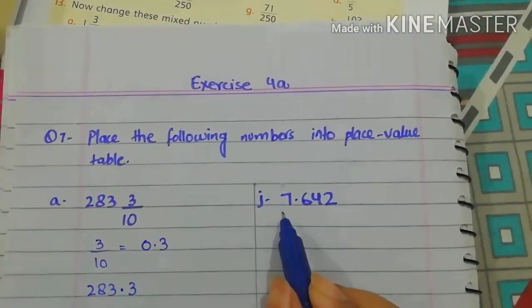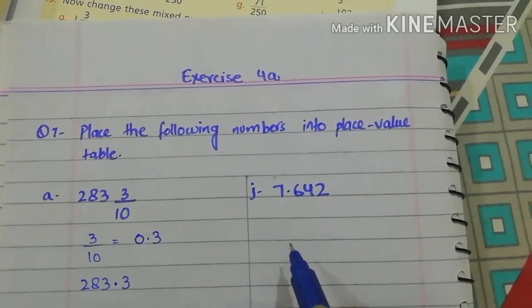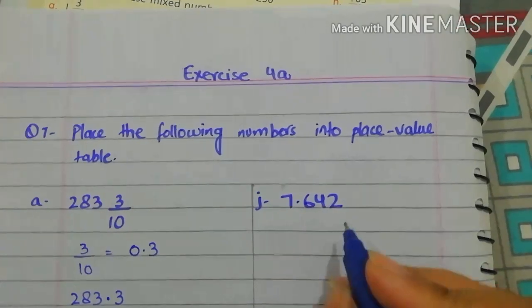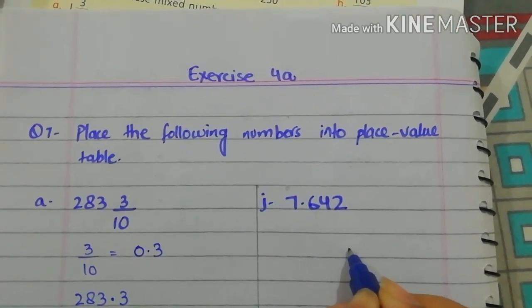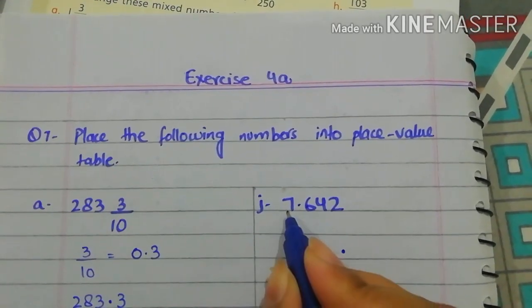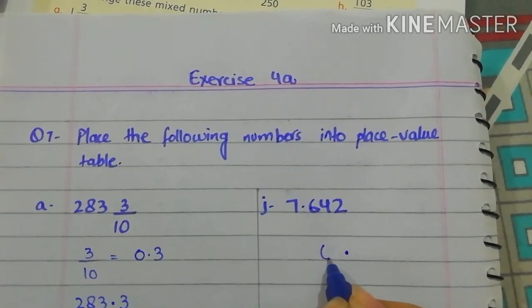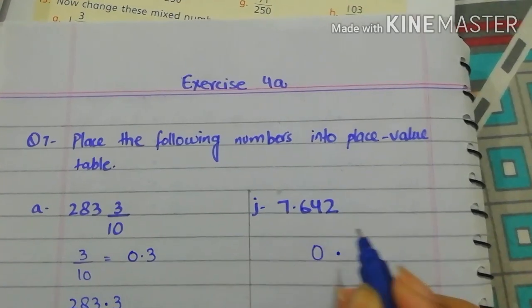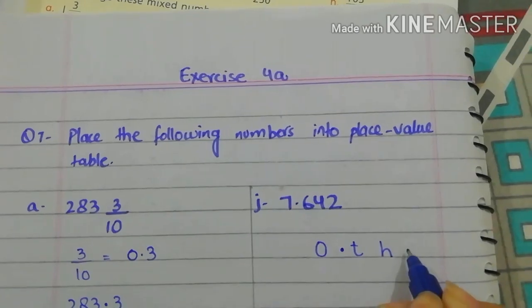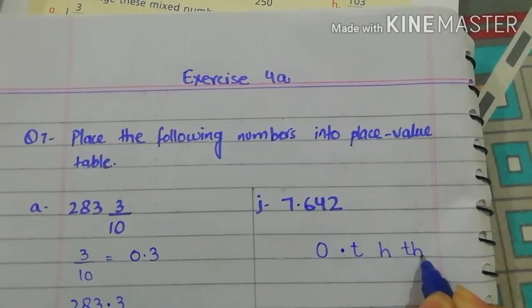Part J. Now, dear students, this value is already in decimal. So, we put this value in the place value chart. So, first, decimal. Then, before decimal we have one value. So, that is 1's. And after decimal we have three values. 10's, 100's and 1000's.